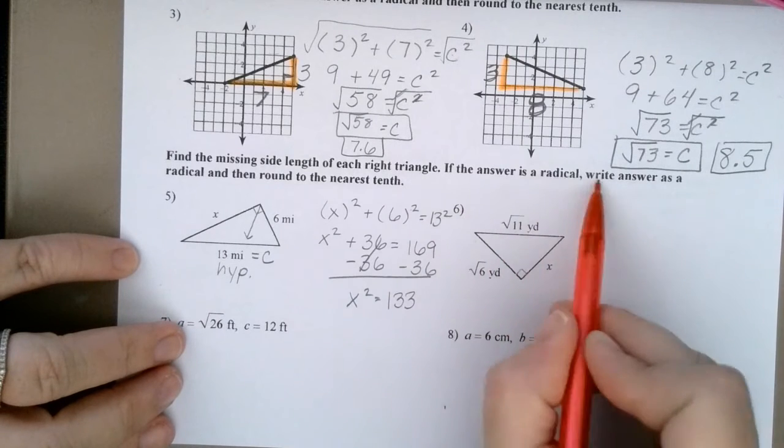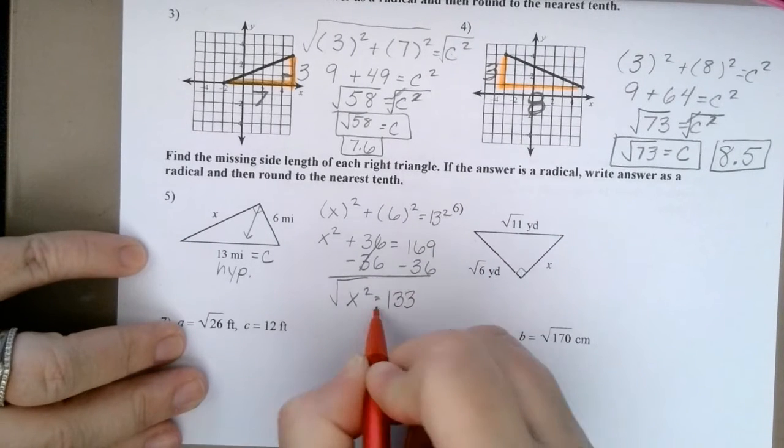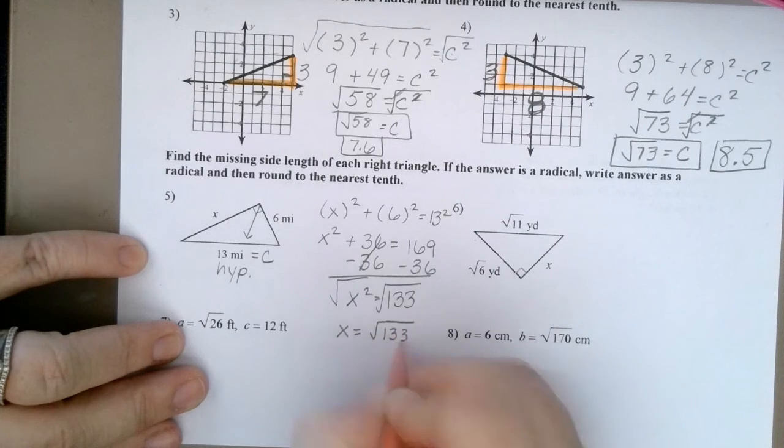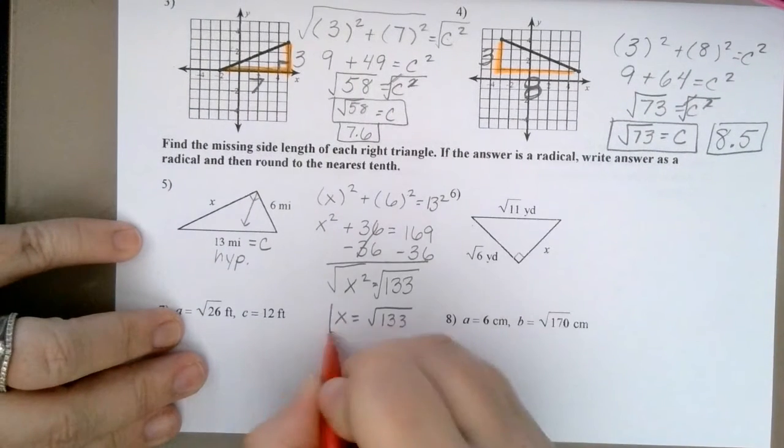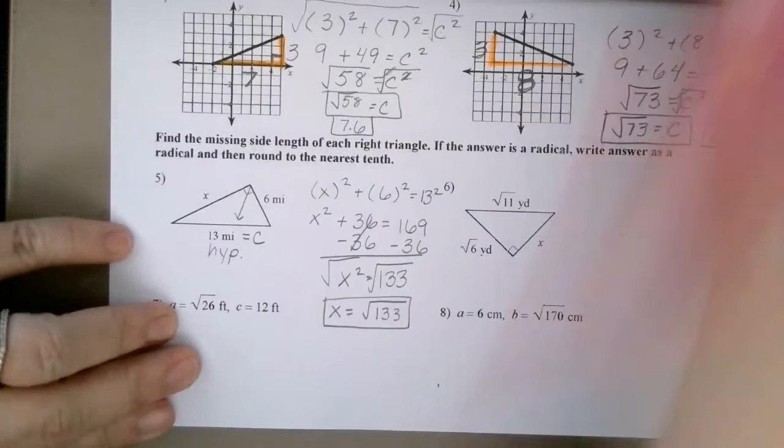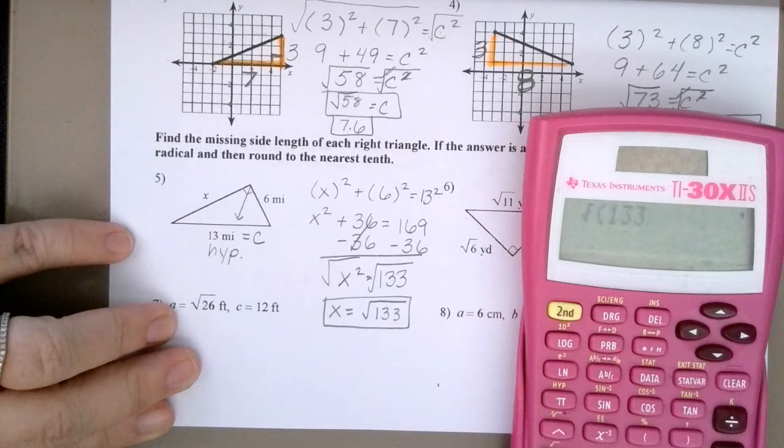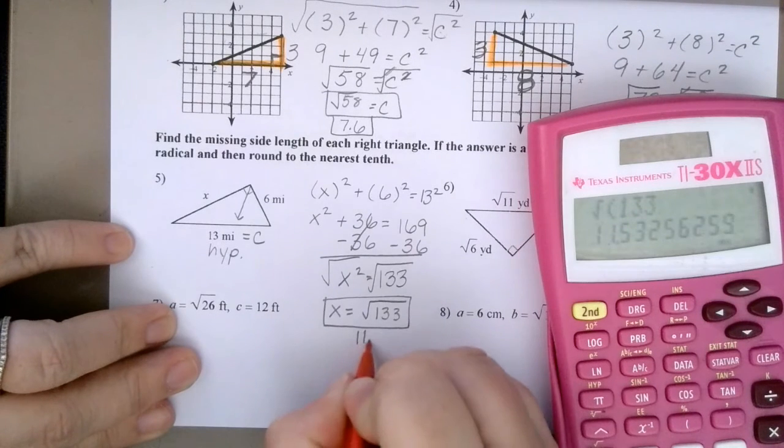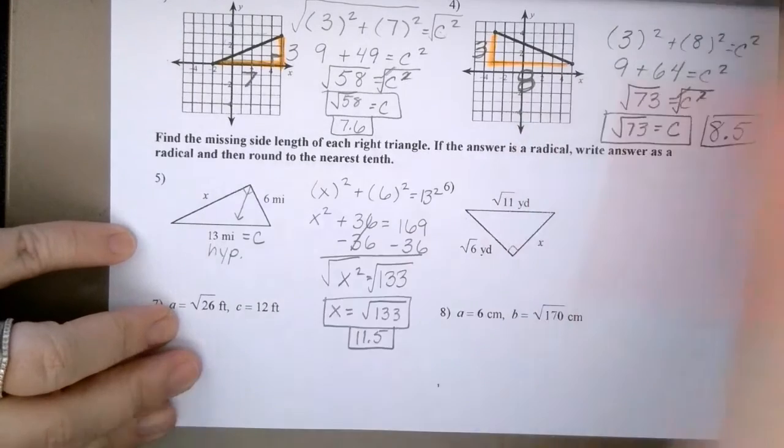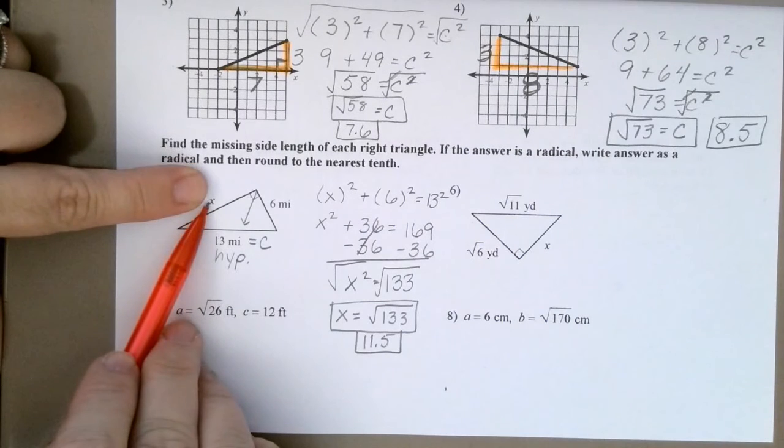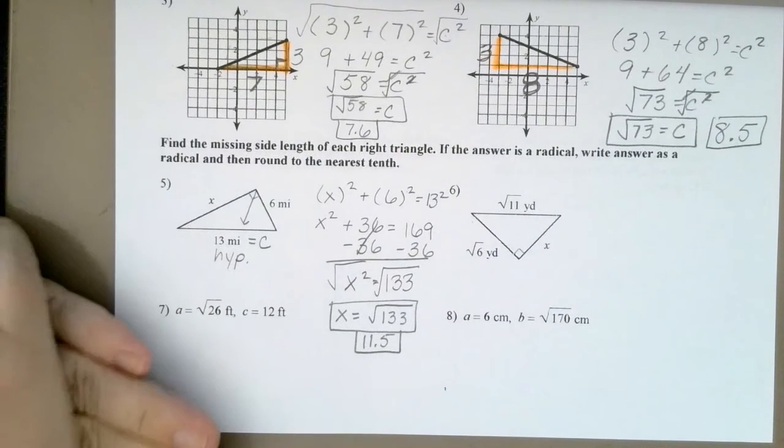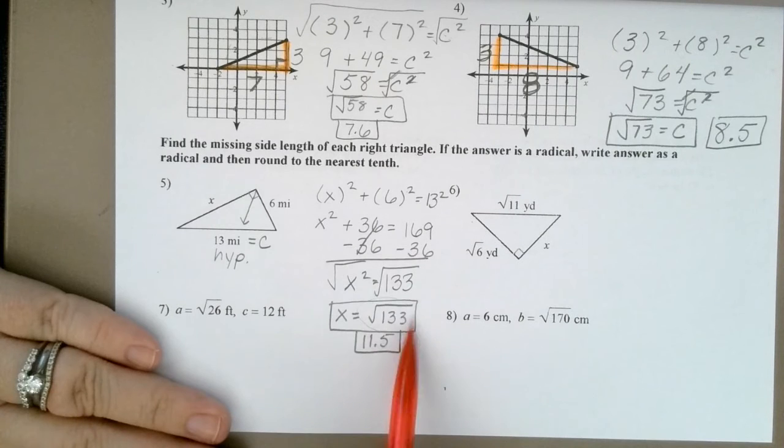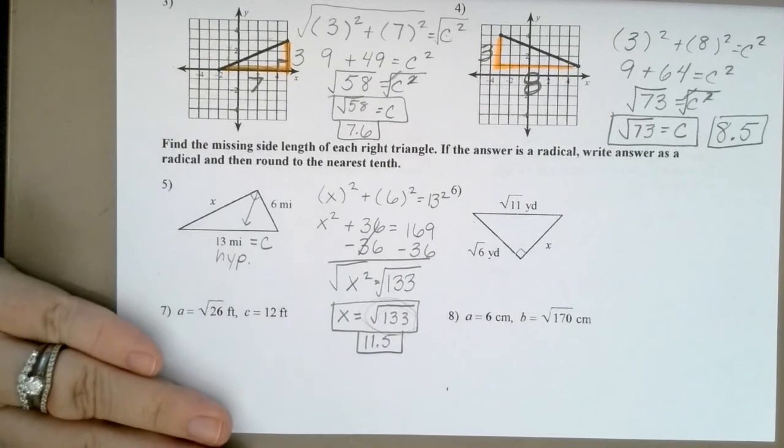By the way, it does say if the answer's a radical, write as a radical and round. So if I'm square rooting both of those, X equals rad 133. I can't draw a tree for that. And as an approximate, 11.5. So this side right here, you could call it radical 133 or you could call it 11.5. To check it, you could plug it in. I would use this, the exact value, not the approximate value.